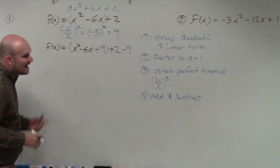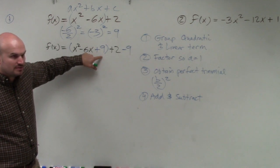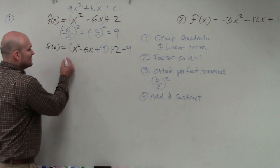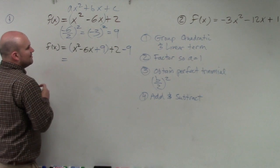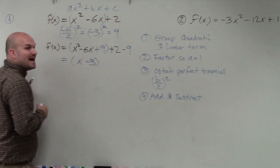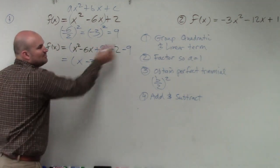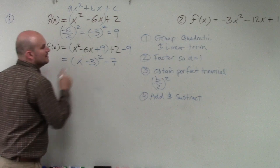So that's why I add and subtract. But why did I add to the inside? Because this is now a perfect square trinomial. This can be factored. The factored form of this is x minus 3 times x minus 3, or x minus 3 squared. 2 minus 9 is negative 7.